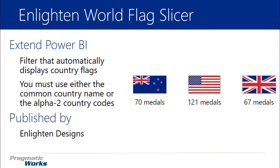The World Flag Slicer, as you might guess by the name, is a filter that will automatically take in country names or codes and convert those into a flag. So if you have a dataset that has a country name or a two-character alpha country code, it will convert that into a flag. That way, whenever you want to filter something, you can select a flag instead of the text for United States, United Kingdom, Australia, or whatever it may be.